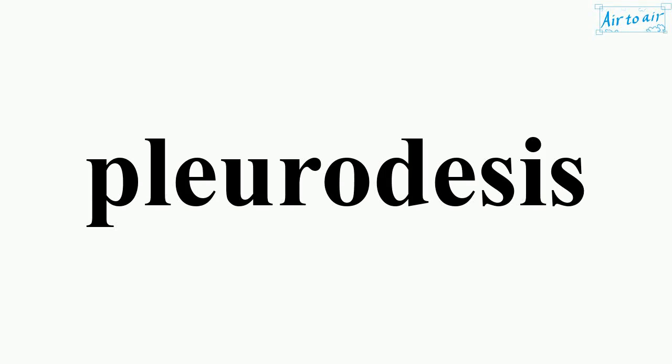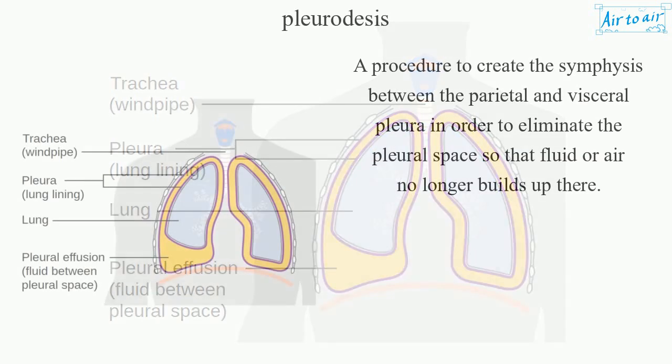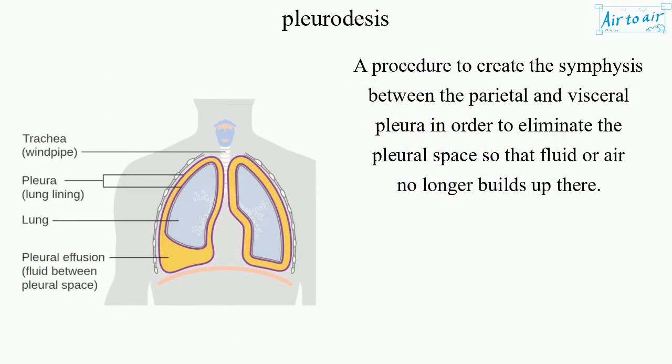Pleurodesis. A procedure to create the symphysis between the parietal and visceral pleura in order to eliminate the pleural space, so that fluid or air no longer builds up there.